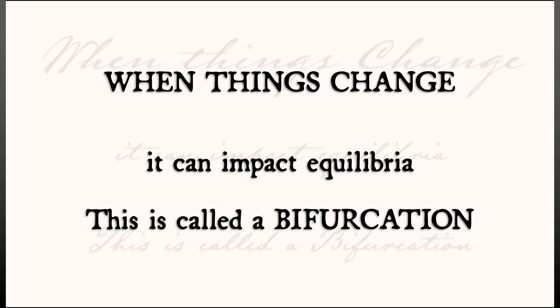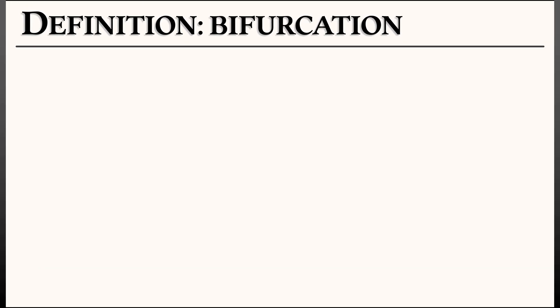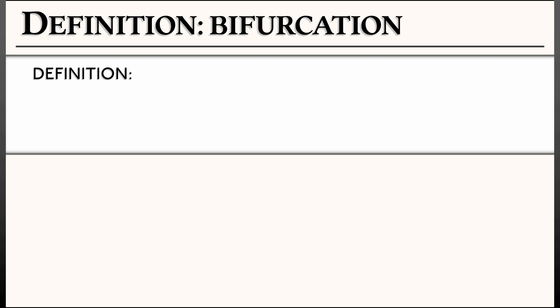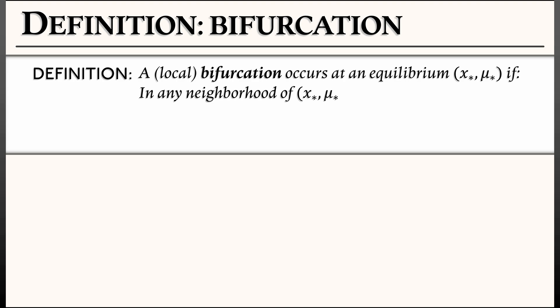Let's do a slightly more formal definition. A local bifurcation occurs at an equilibrium (x*, μ*) if in any neighborhood of that point in state and parameter space—that is, I change x a little bit or I change μ a little bit—then there is a change in the number or types of equilibria that you have.